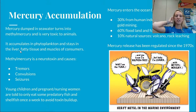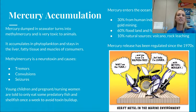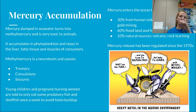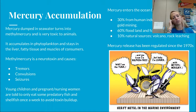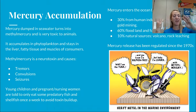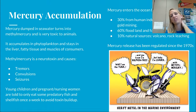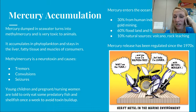Mercury dumped into seawater can turn into methylmercury, which is really toxic. It accumulates in phytoplankton and stays in the liver and fatty tissues of consumers. Methylmercury is a neurotoxin that can cause tremors, convulsions, and seizures. Young children and pregnant or nursing women should not eat predatory fish because mercury builds up in fat cells. Mercury enters the ocean 30% from human industry such as coal, oil burning, and gold mining; 60% from floods on land and forest fires; and 10% from volcanoes and rock leaching. Mercury release has been regulated since the 1970s, and mercury can cause Minamata disease.